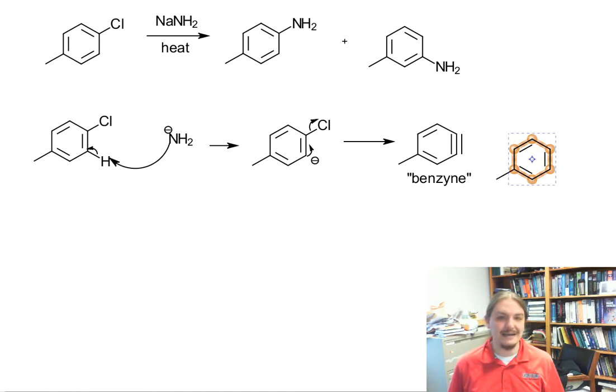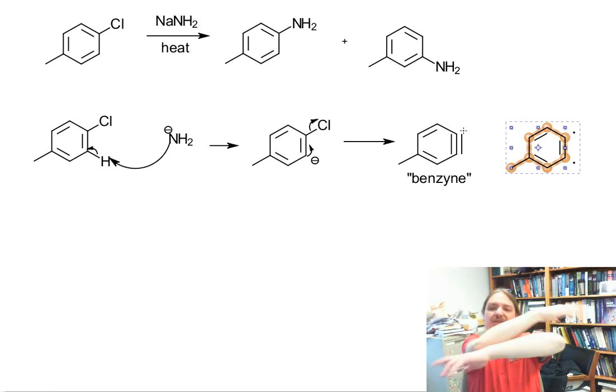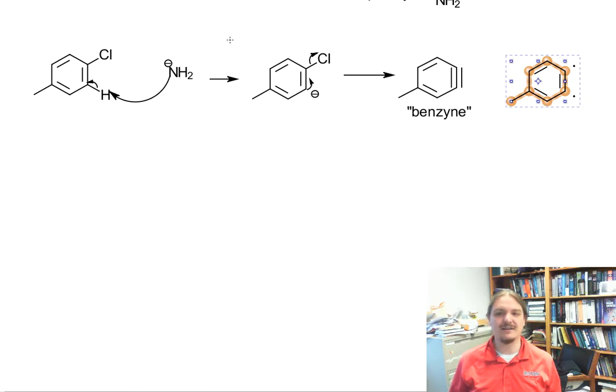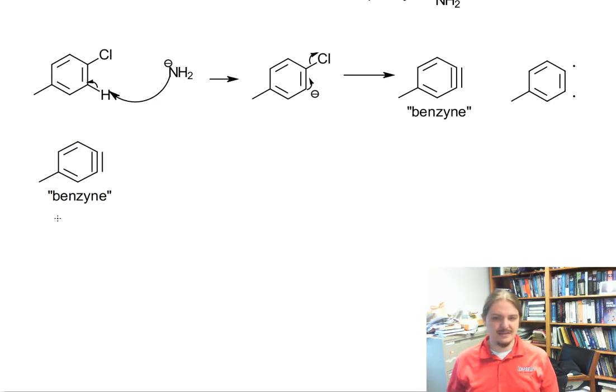But instead is perhaps equivalent to a diradical or whatever, just given the sort of difficulty of having two pi bonds and one of them hanging out partially inside the ring. Benzyne is really reactive if it exists. And there are a lot of chemists that really did not believe this intermediate existed, but it does explain the behavior of the reaction.